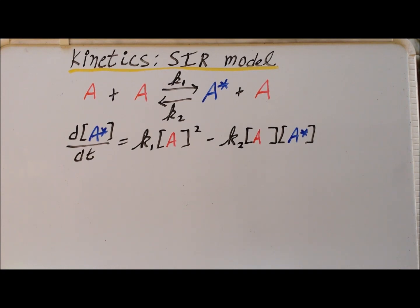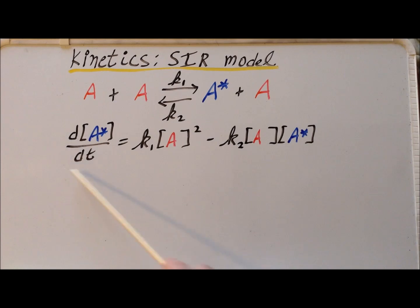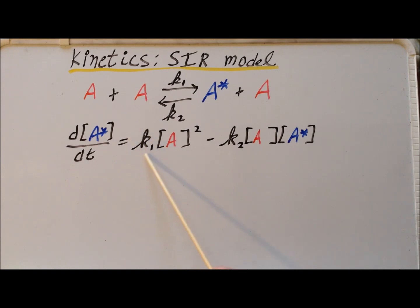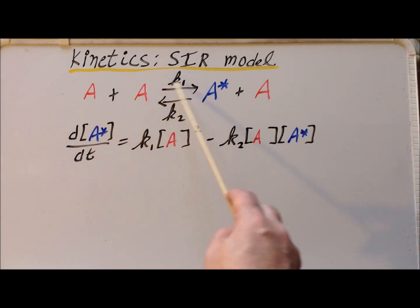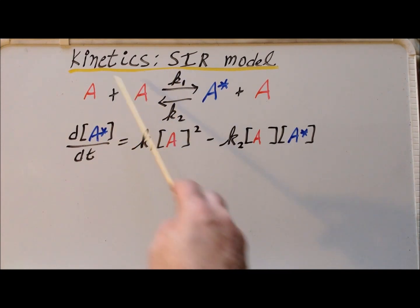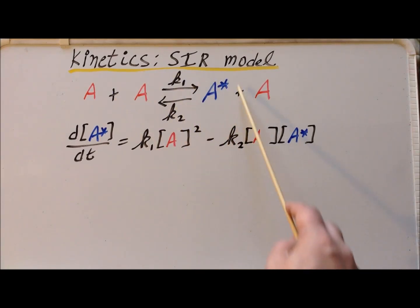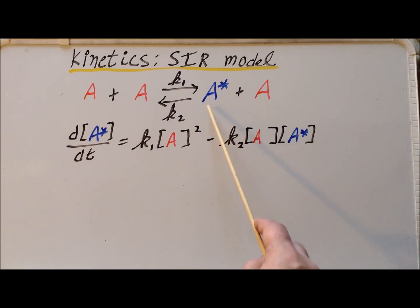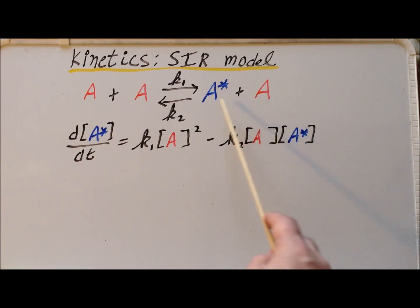We can then write down an expression for the change in the concentration of the activated molecule A star over time — d/dt of the concentration of A star. It's equal to the rate constant K1 times the concentration of A squared, which is a second order rate constant, and this process going from left to right increases the amount of A star, so it has a positive coefficient. And then we decrease the amount of A star with a second order rate constant K2 times the concentration of A times the concentration of A star. This is the deactivation process.